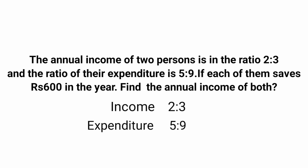Both of them save rupees 600 in the year. To get savings, we subtract expenditure from income. From the given ratios, the difference between income and expenditure for the first person is 5 minus 2, that is 3, and for the second person it is 9 minus 3, that is 6.